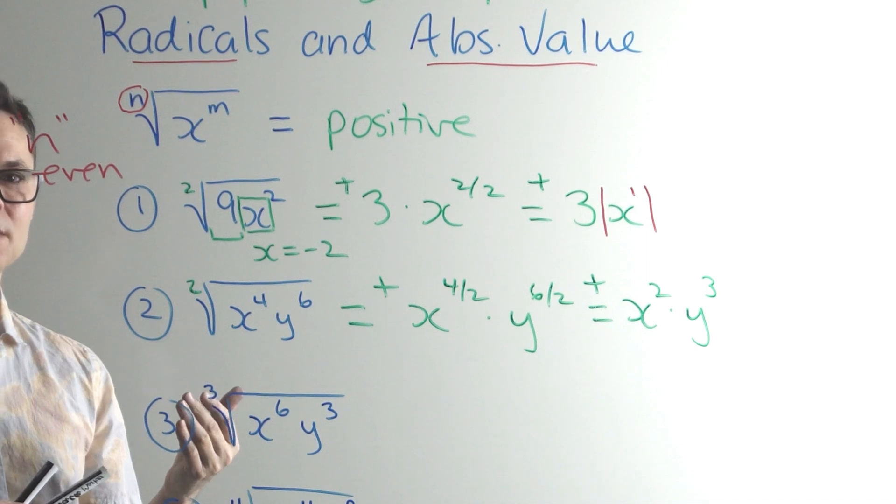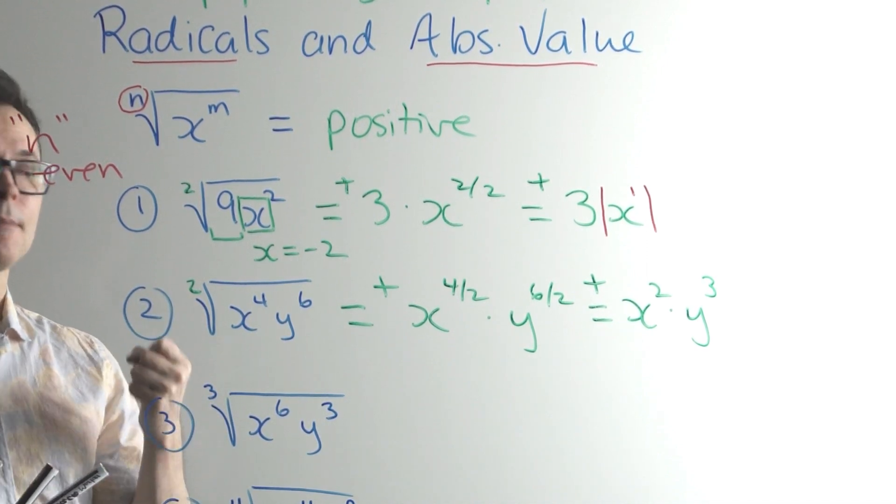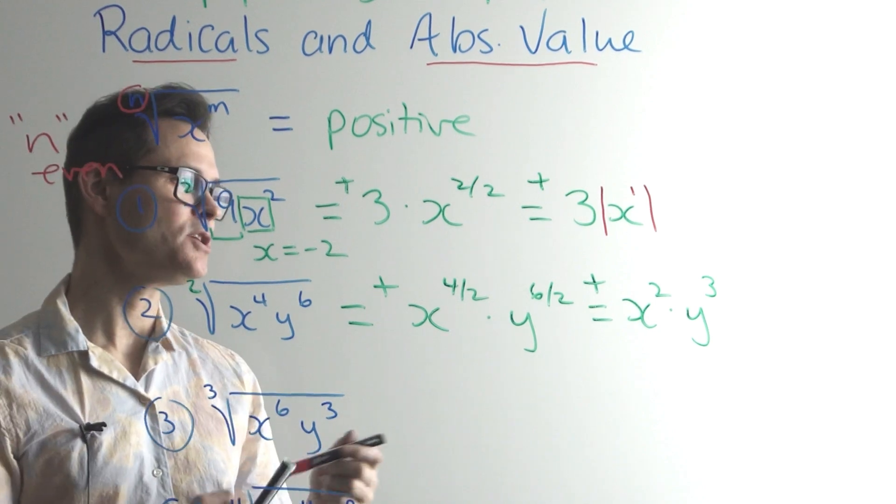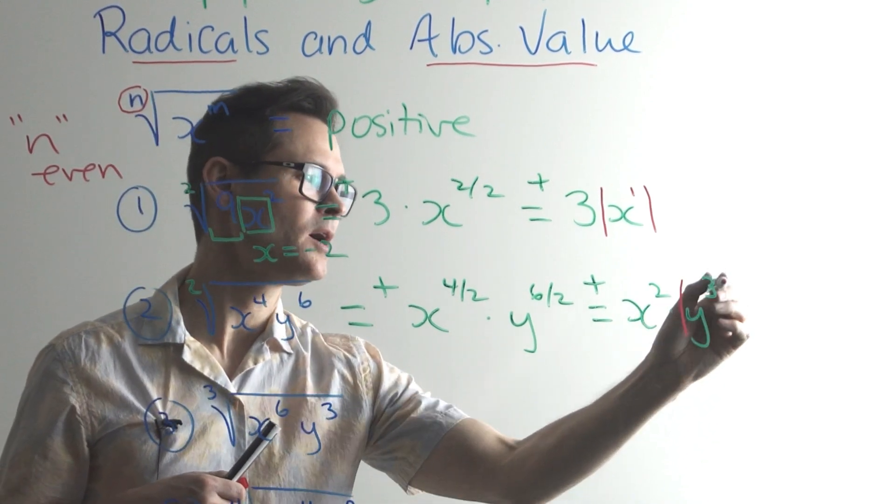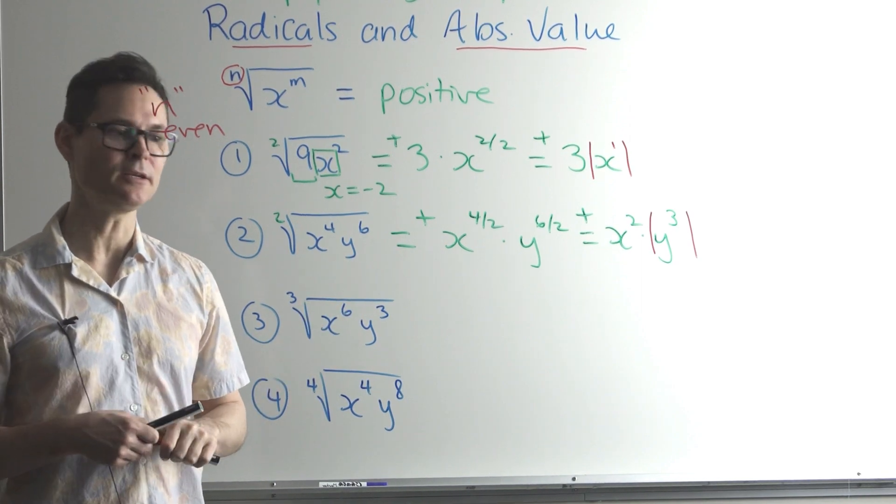y is being cubed. And so the cube doesn't guarantee that the answer stays positive. So in this case, you have to put absolute value around the y. You can put it around the x, but it's redundant. It's not needed.